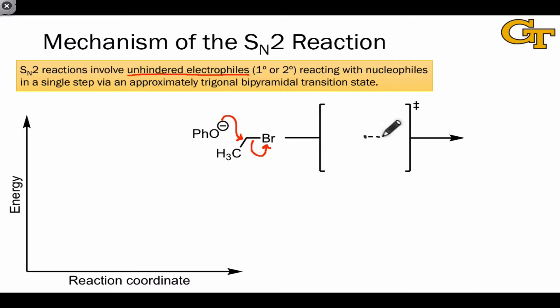In the transition state for the SN2 reaction, partial bonds exist to both the leaving group, here bromine, and the nucleophile, here phenoxide. The atoms linked to the electrophilic carbon not directly involved in the reaction assume a geometry that's approximately trigonal planar, halfway between the two tetrahedral configurations of the starting materials and products.